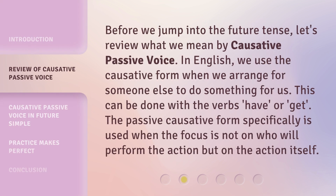Before we jump into the future tense, let's review what we mean by causative passive voice. In English, we use the causative form when we arrange for someone else to do something for us. This can be done with the verbs 'have' or 'get.' The passive causative form specifically is used when the focus is not on who will perform the action, but on the action itself.